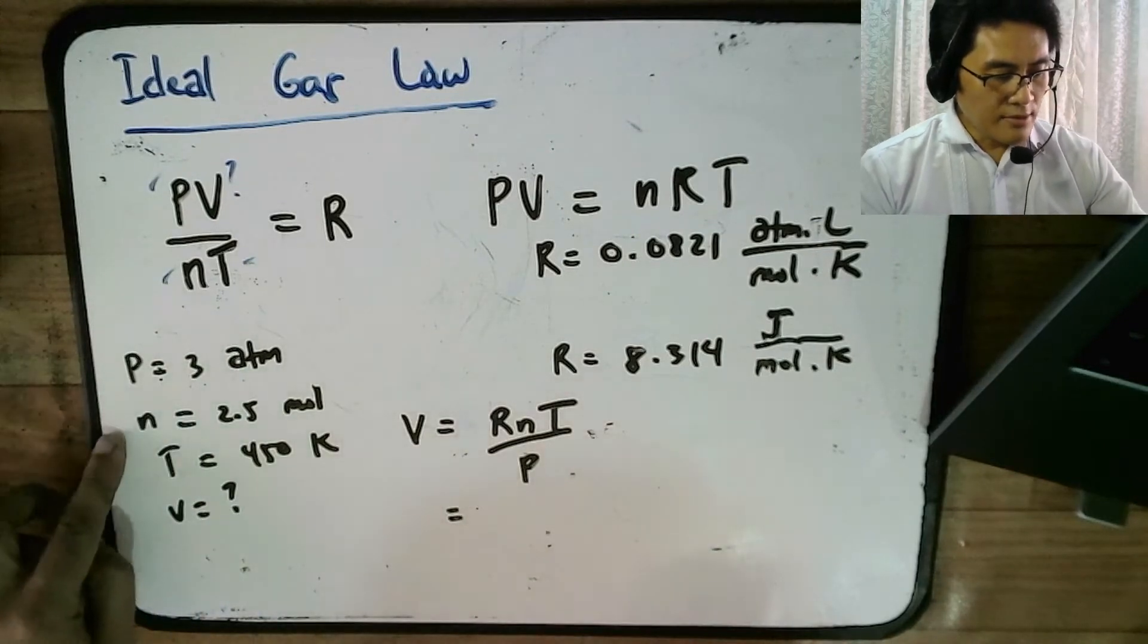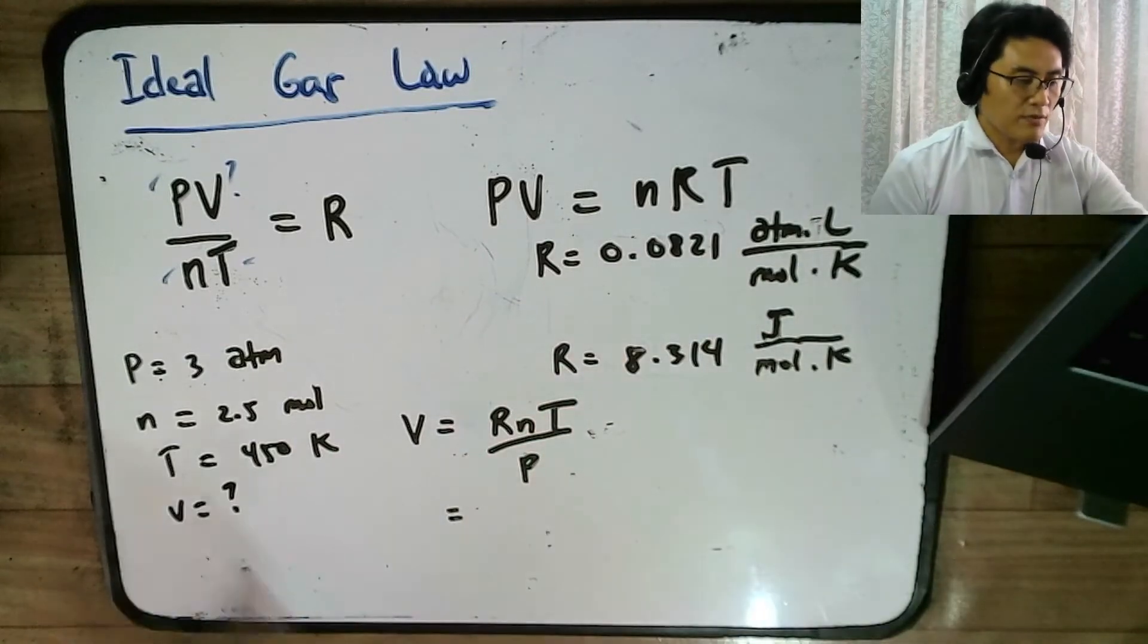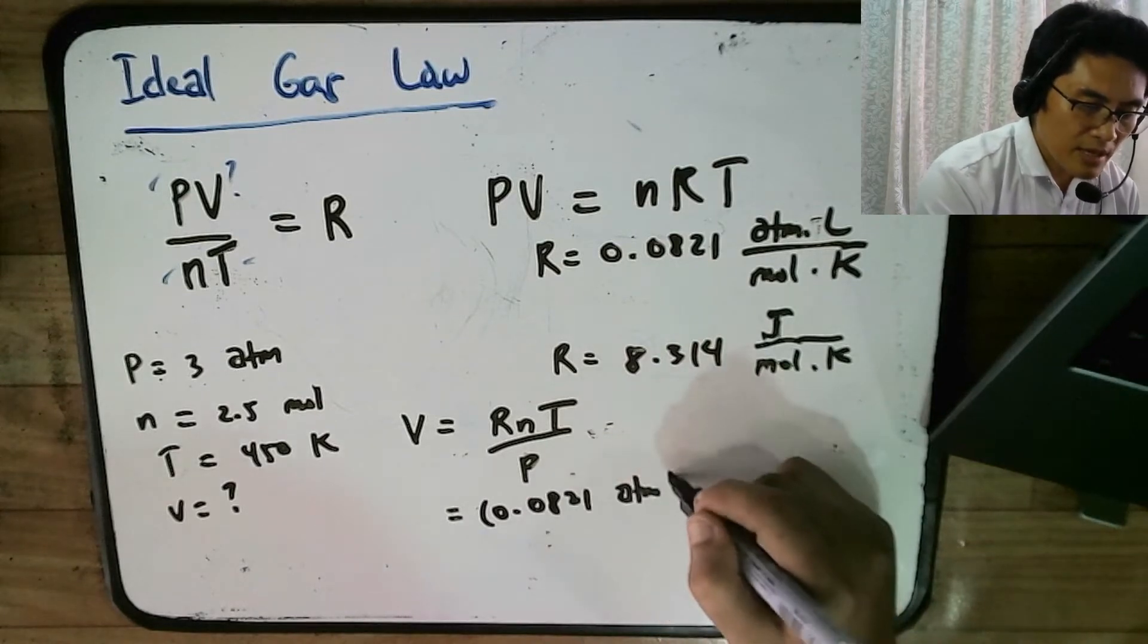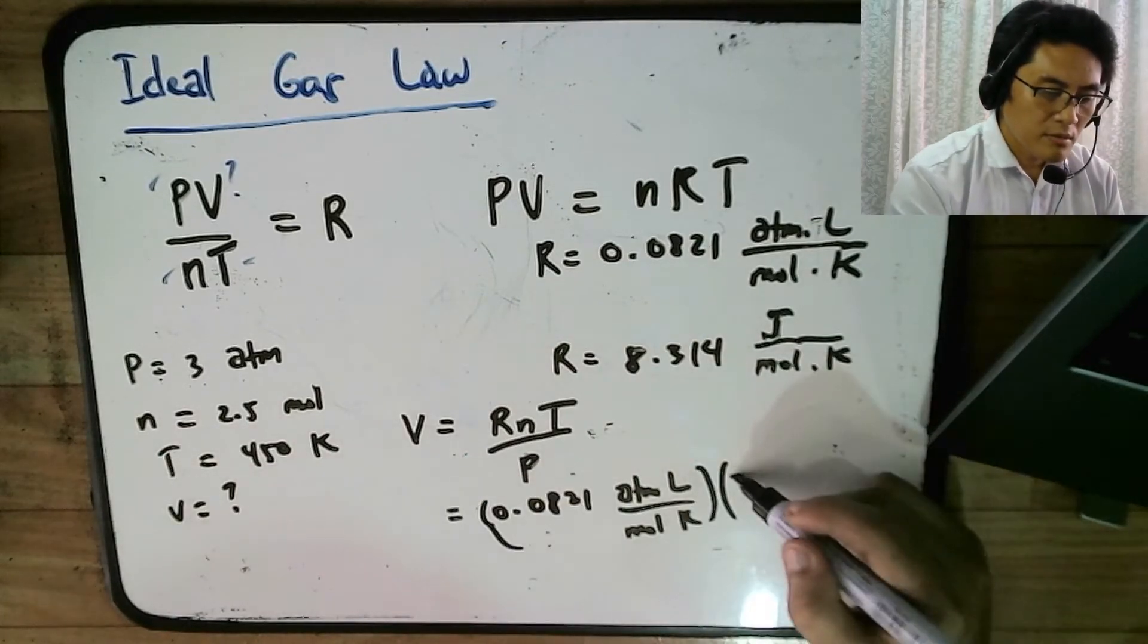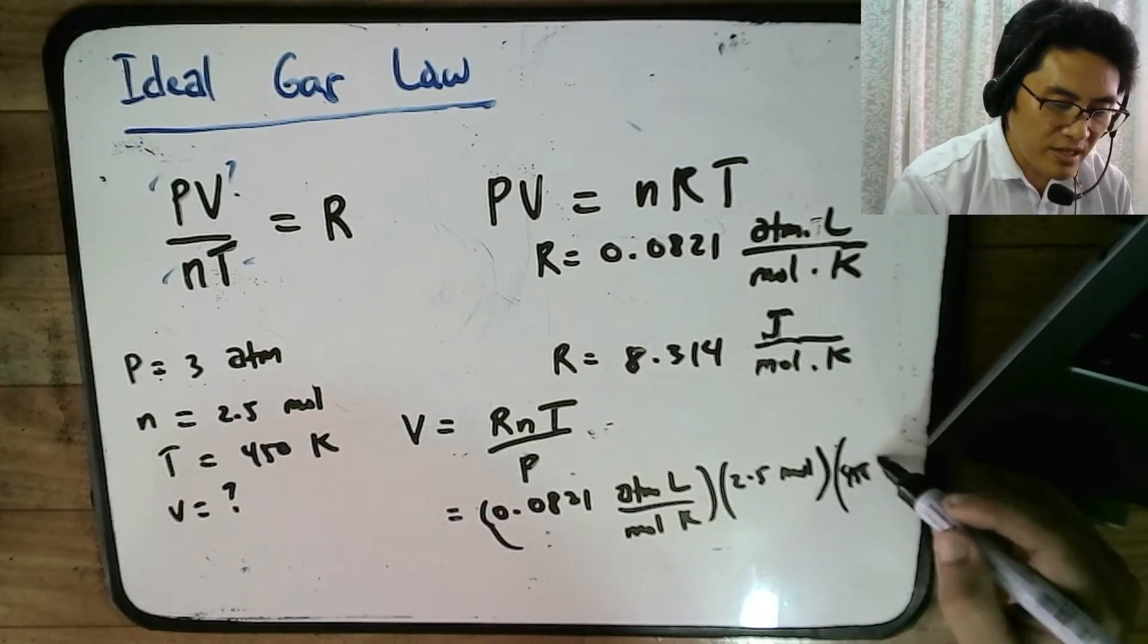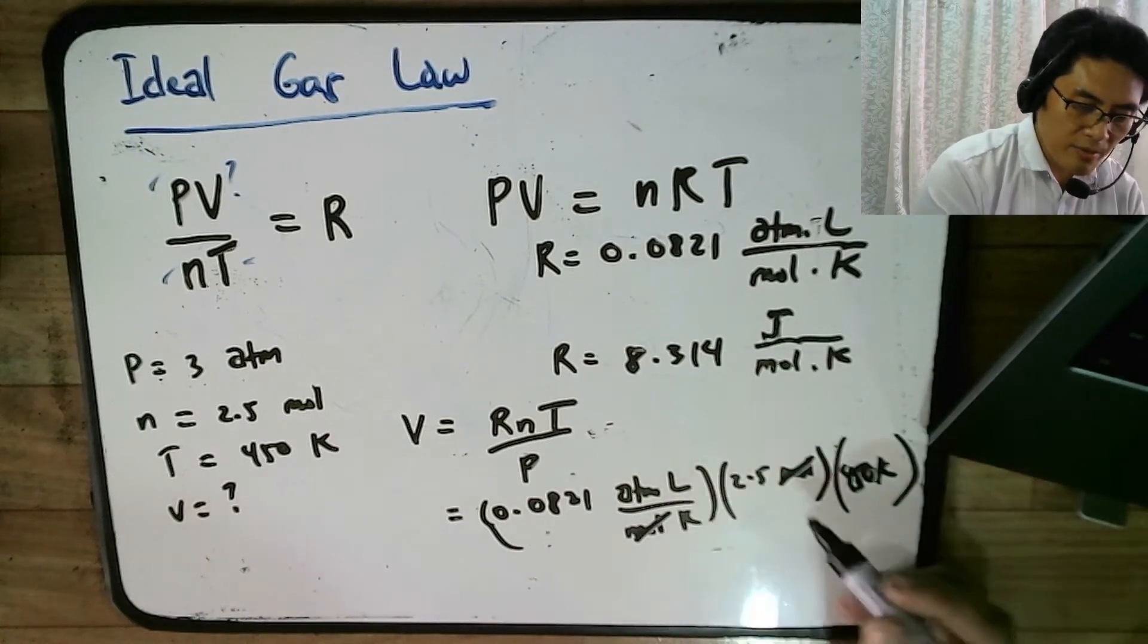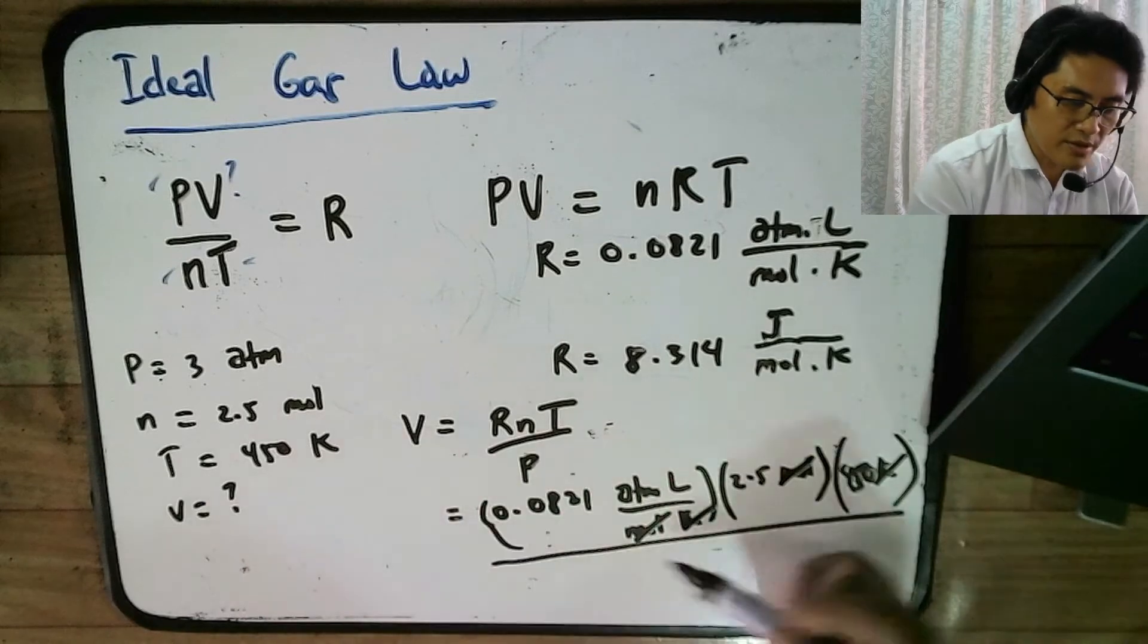Now remember, in your pressure, you're using ATM, and therefore, you can use this, which is in ATM. You cannot use this because this is for using Pascals. So it will be 0.0821, and this would be ATM liter per mole Kelvin. And then the N would be 2.5 moles, and then the temperature would be 450 Kelvin. And I'll notice that mole here gets canceled out by here, and then you still have the pressure at the bottom. Pressure is 3 ATM.